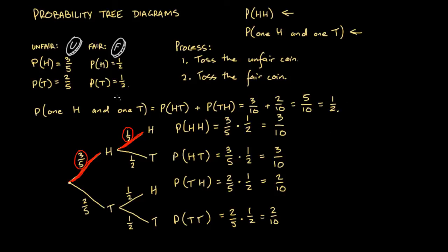So the probability of getting one head and one tail from this process is one half. Probability tree diagrams are fantastic for these multi-stage problems where a condition has multiple results associated with it. What's great about the tree diagram is that it combines both the addition rule and the multiplication rule: we multiply probabilities along the branches to get specific outcome probabilities, then add those probabilities to find the overall probability of a given condition.